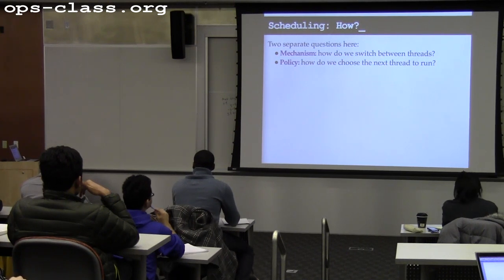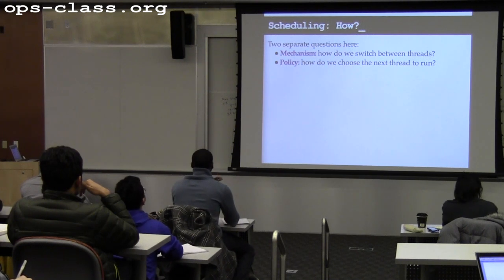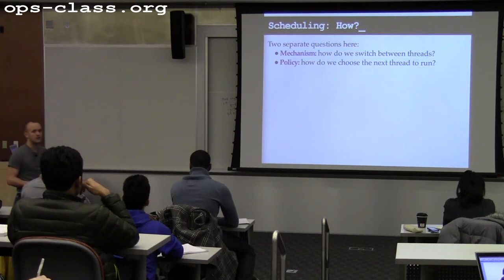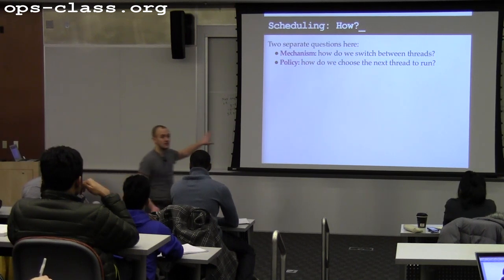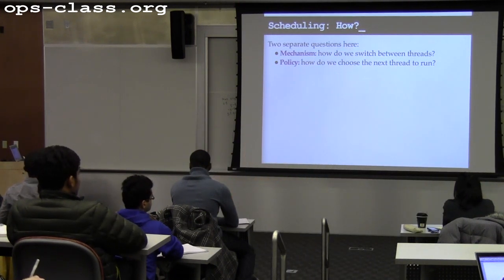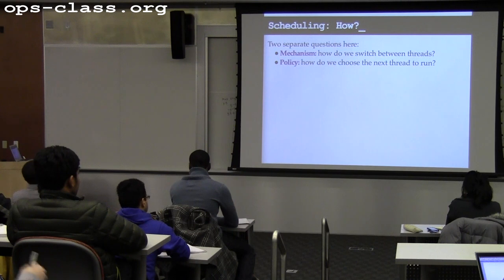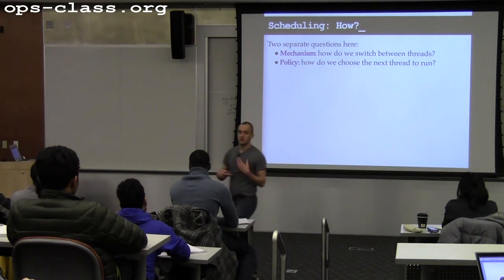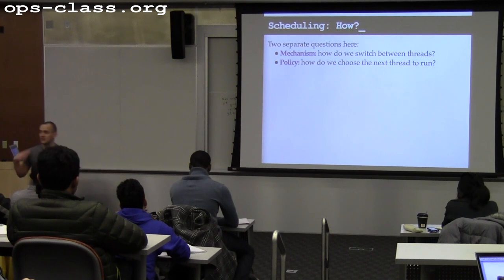Remember, we were going through scheduling — what scheduling is, when we get a chance to schedule, and how we do it. We can cleanly divide scheduling into two parts. The first part is the mechanism for switching threads, which is context switching and saving thread state. We've been talking about that for the last week.